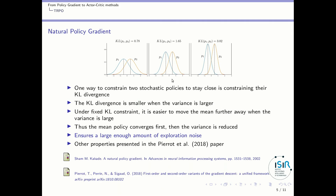To ensure this trust region property, TRPO relies on the notion of the natural policy gradient. One way to constrain two stochastic policies to stay close to each other is to constrain their Kullback-Leibler divergence. You can see on this graph that the KL divergence is smaller when the variance is larger. Here you have two stochastic policies represented by two Gaussians at the same distance — if their variance is large, the KL divergence is small, whereas if their variance is small, the KL divergence is large. So if you want to optimize a gradient using a KL constraint, it will be easier to move the mean further away when the variance is large.